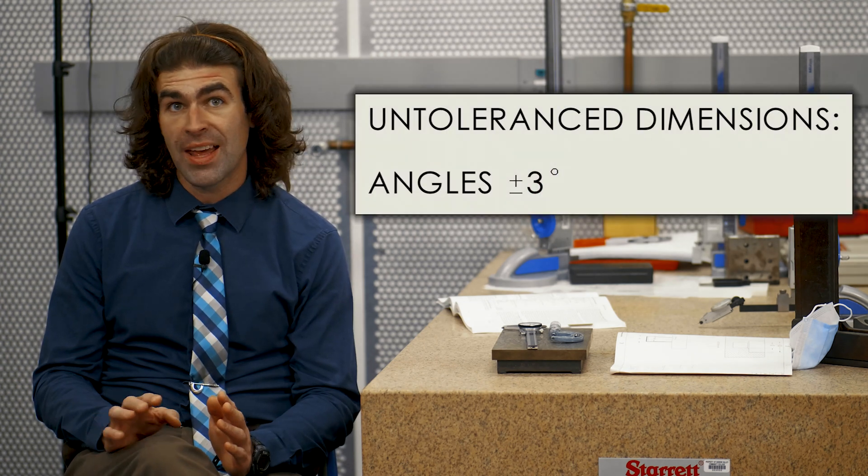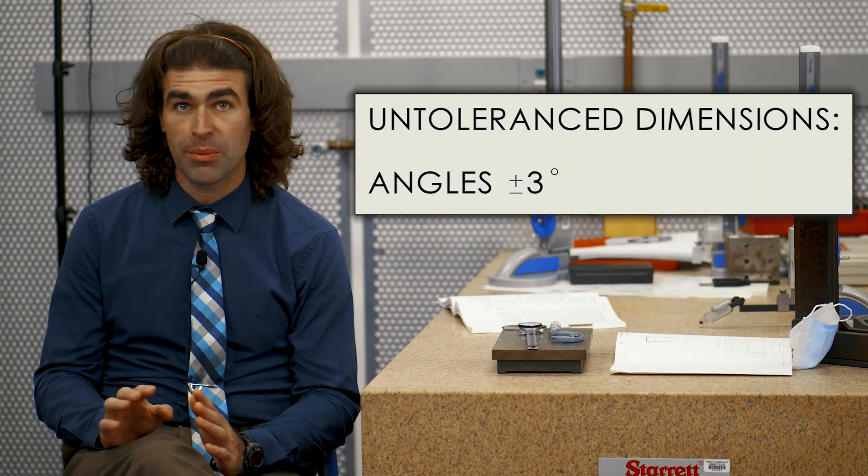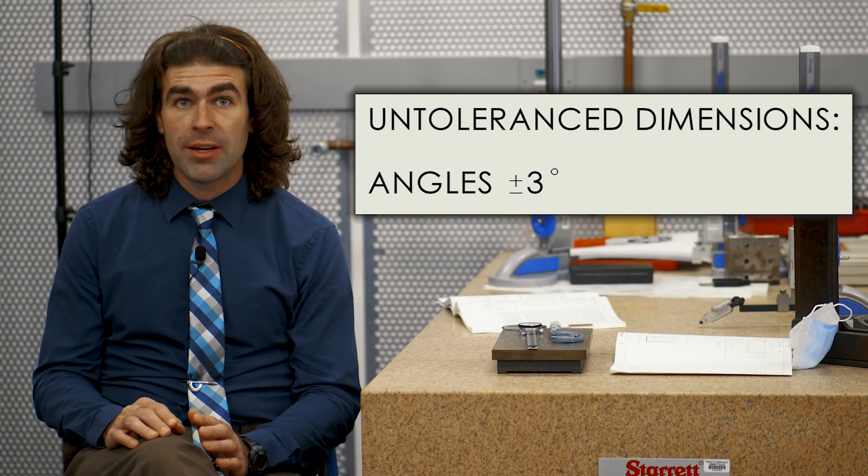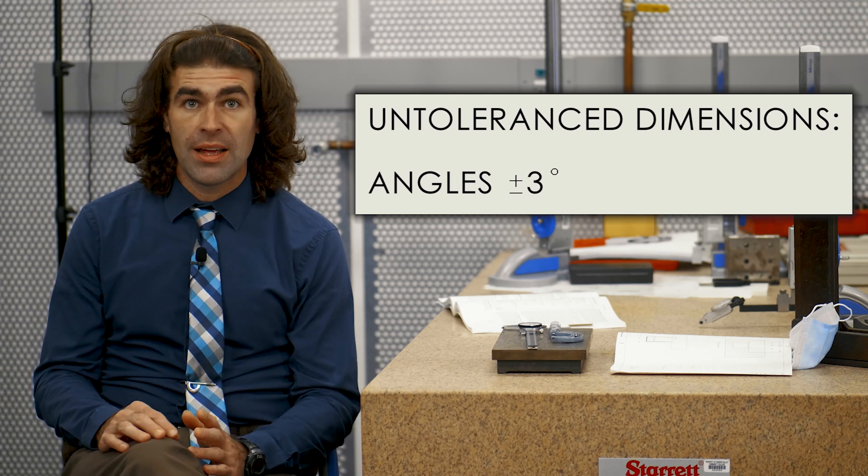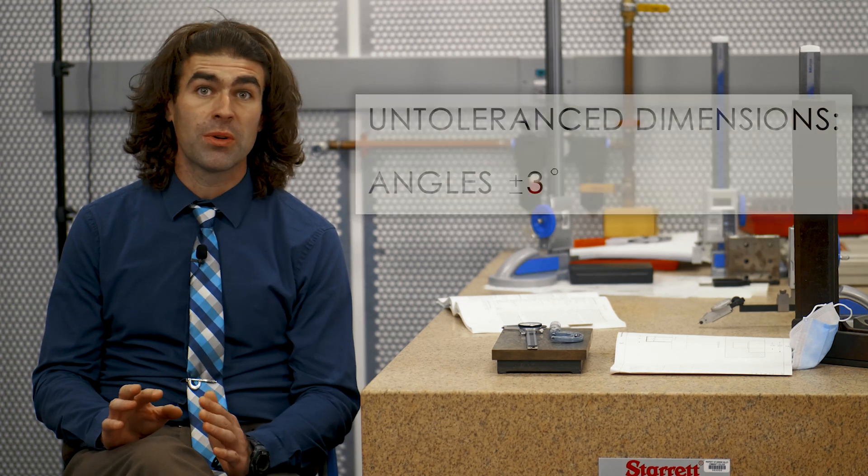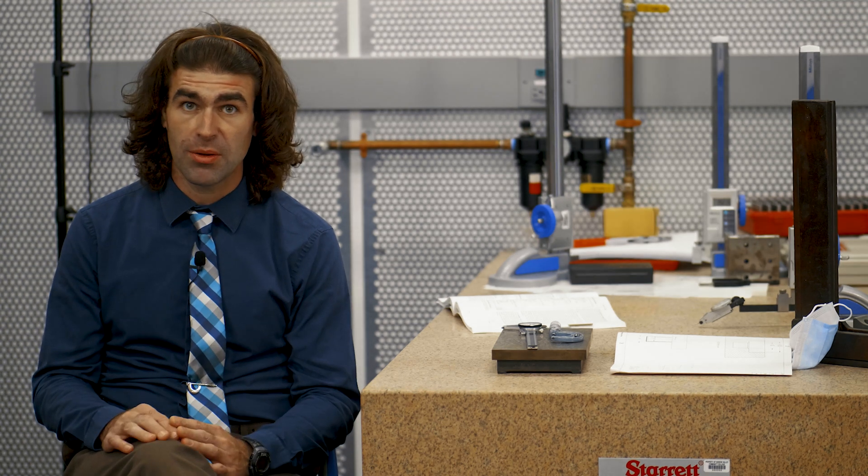If there's no direct tolerancing, it's going to come from the title block. Now, title block tolerances are really common. I recommend that you just use them in case you forget to tolerance something. Some companies use them for a lot of things. Title block tolerances will almost always have an angle tolerance. It'll say something like, untoleranced angles are plus or minus something degrees. In this example, I'm going to use three degrees. Now I'm doing this because I want it to be really obvious what's going on here. Most companies don't use three degrees. They use like half a degree or something.